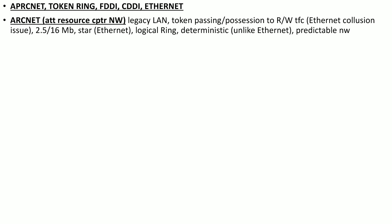ARCnet does resolve the collision issues which are present with Ethernet technology, but it is now deprecated. This technology used 2.5 or 16 Mbps data speed in its later version. It used the star topology, which is also now used by Ethernet. It established a logical ring, and in this logical ring the possession of the token allows a network device to communicate over the network. Therefore it is more deterministic and predictable, unlike Ethernet, because in Ethernet there are collision issues so network behavior is not predictable.